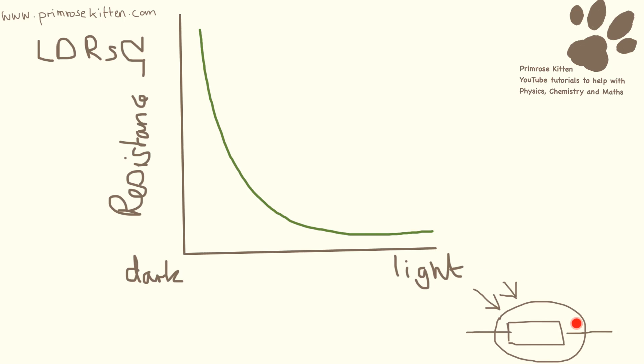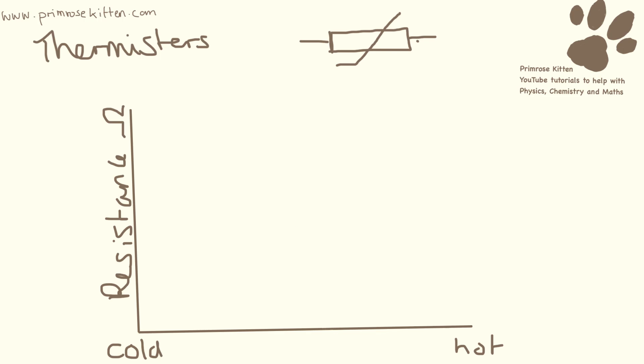This is the symbol for a thermistor. In a thermistor, the resistance depends on the temperature. So the graph looks the same. When it's hot, we have low resistance. And when it's cold, we have high resistance.